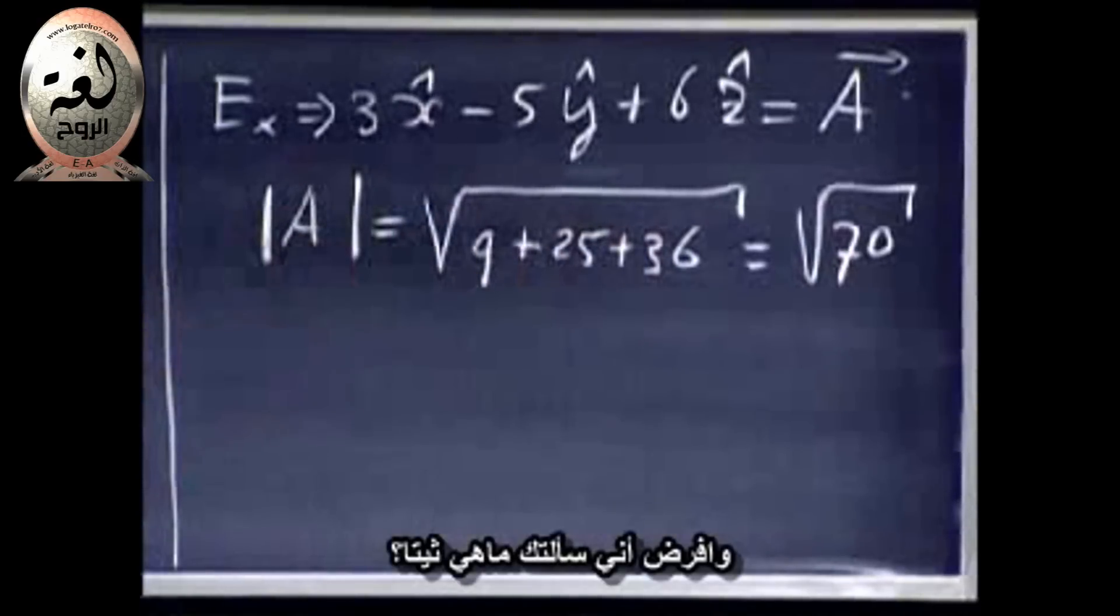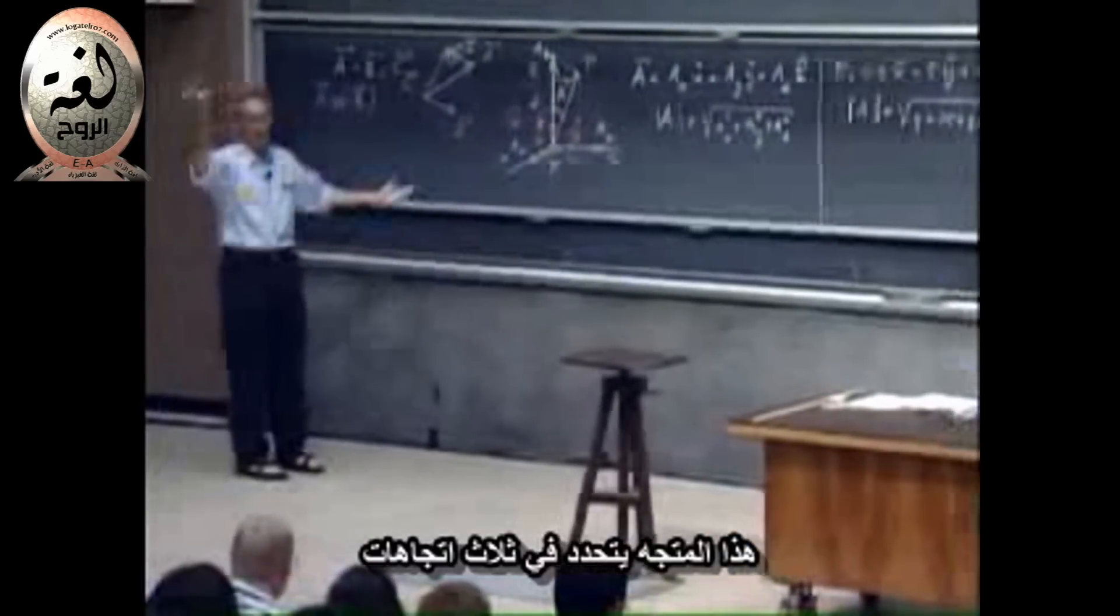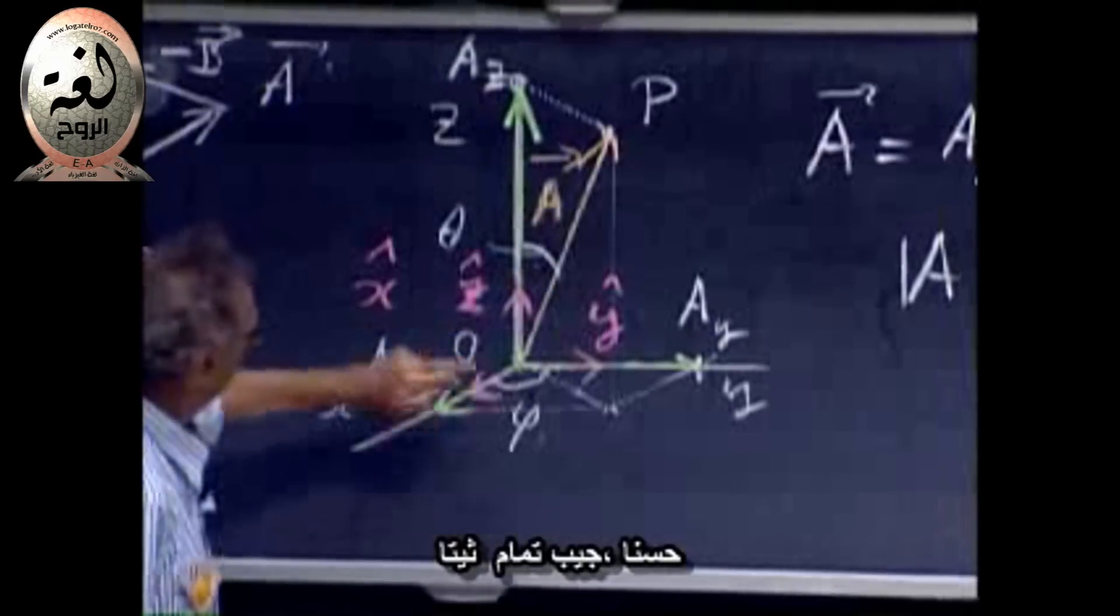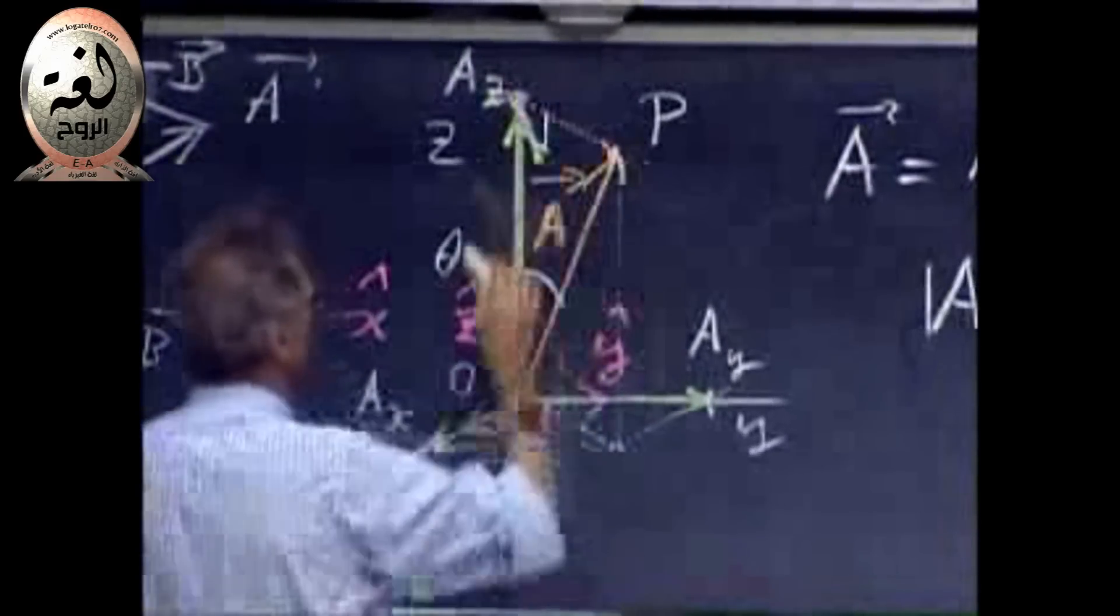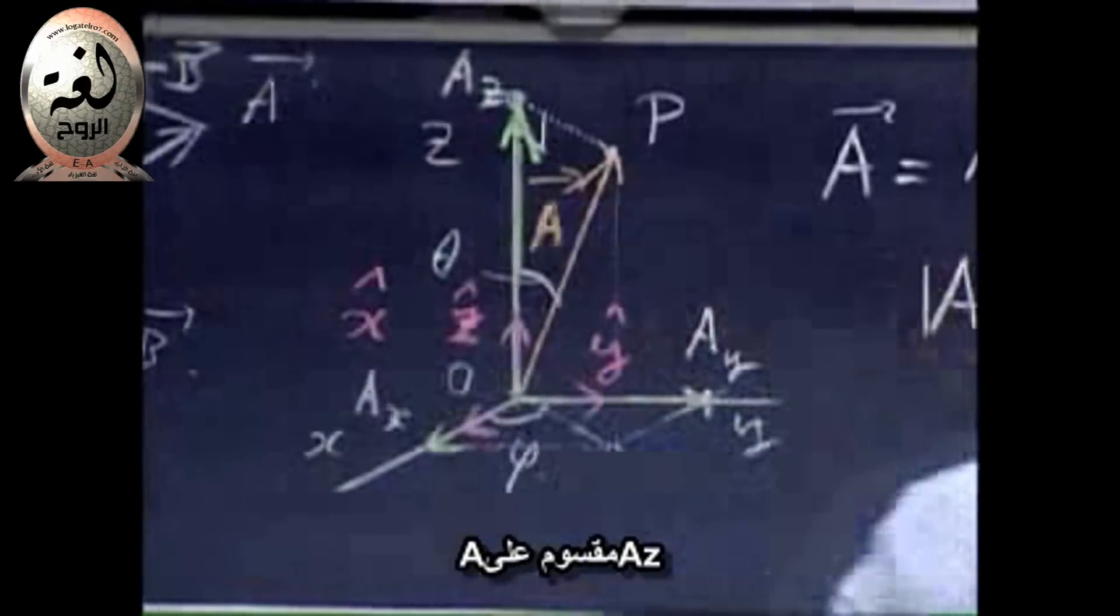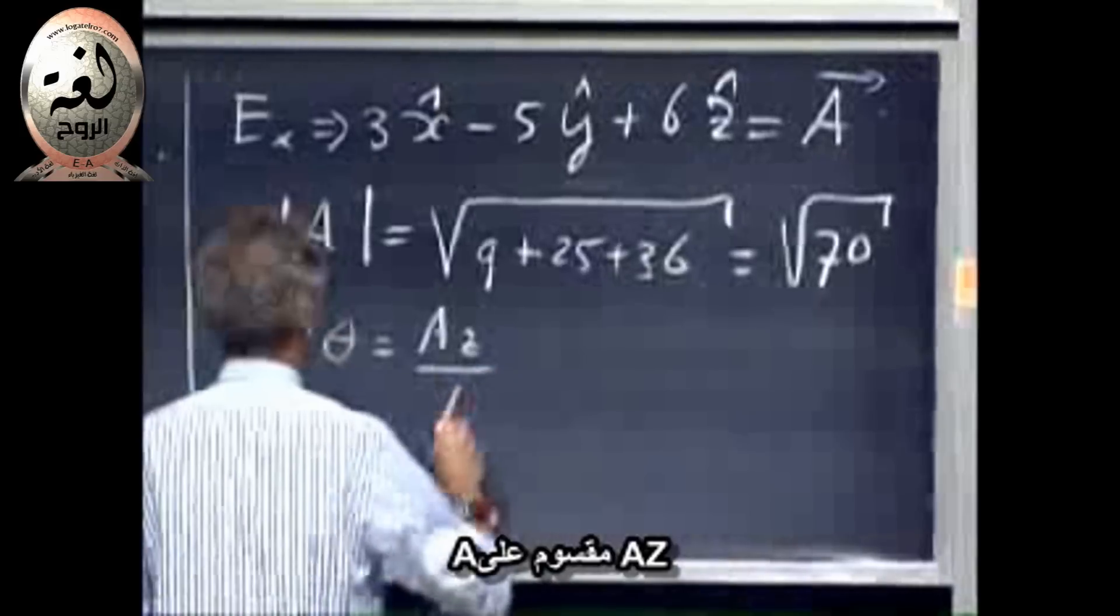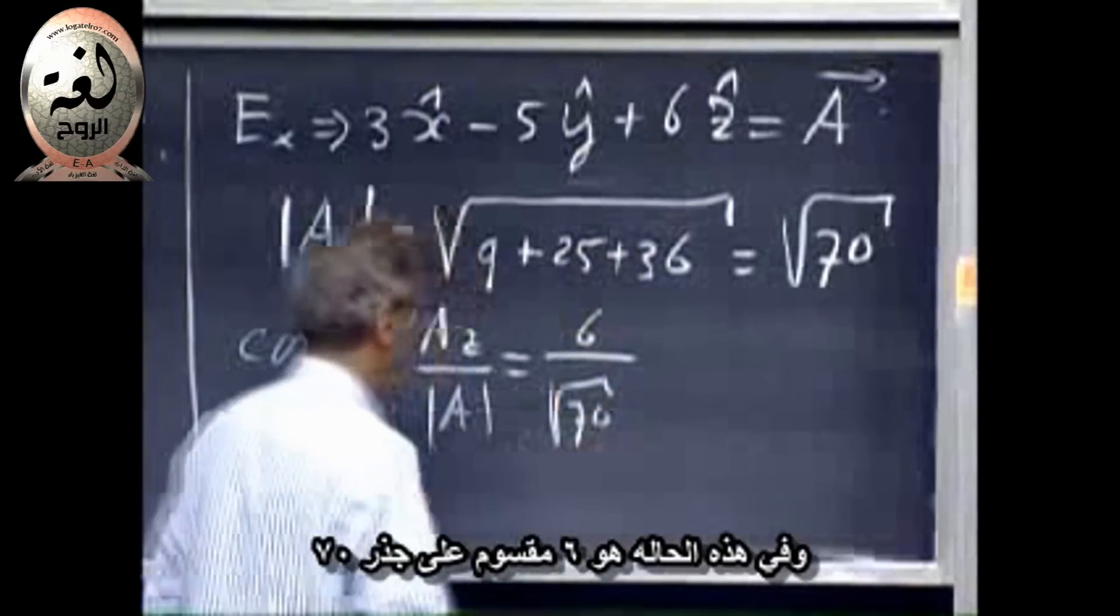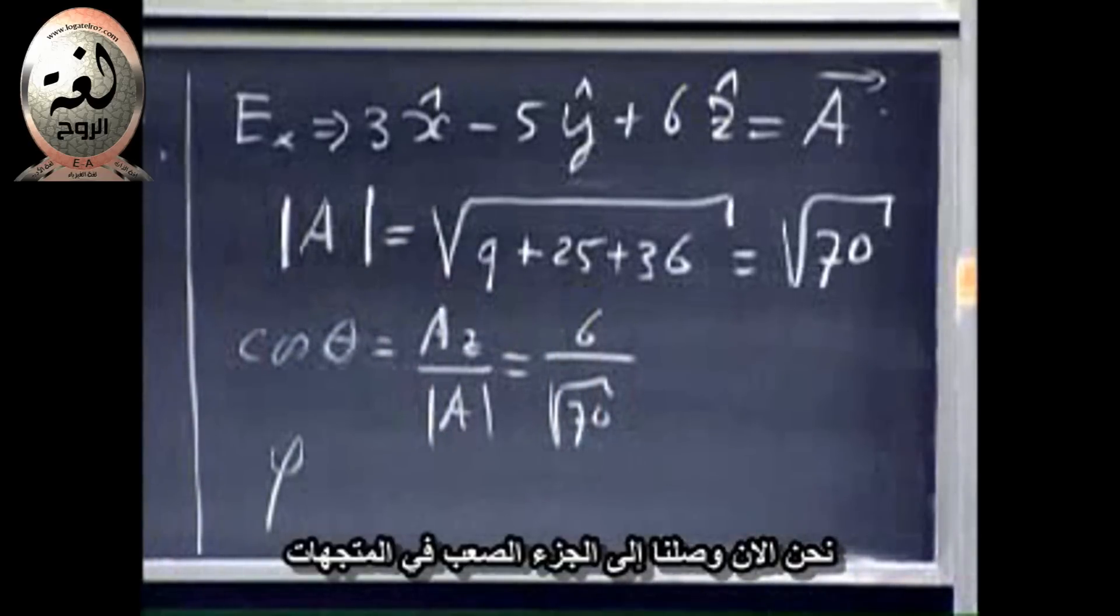And suppose I asked you, what is theta? It's uniquely determined, of course. This vector is uniquely determined in three-dimensional space. So you should be able to find phi and theta. Well, the cosine of theta—see this angle here, ninety degrees, the projection—the cosine of theta is A_z divided by A itself. So the cosine of theta equals A_z divided by A itself, which in our case would be six divided by the square root of seventy. And you can do phi. It's simply a matter of manipulating some numbers.